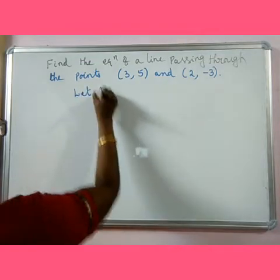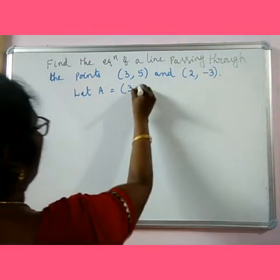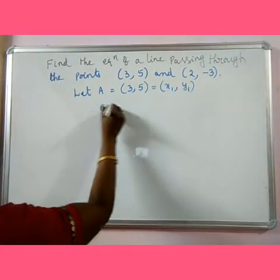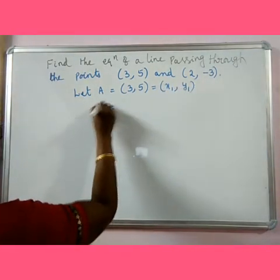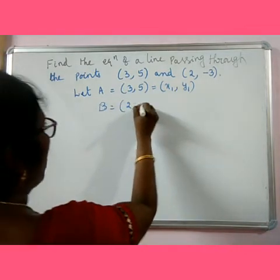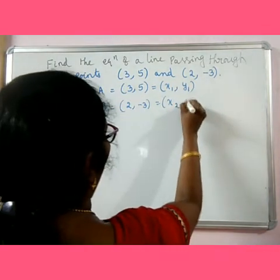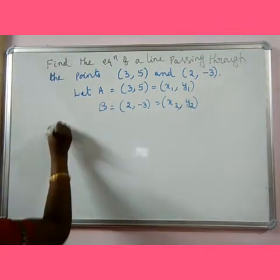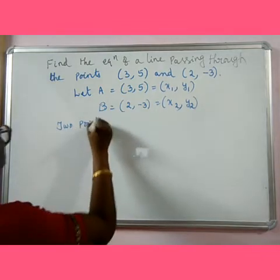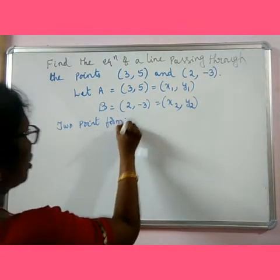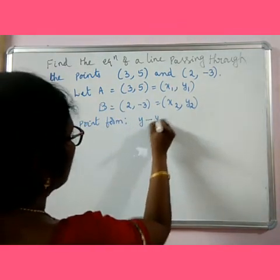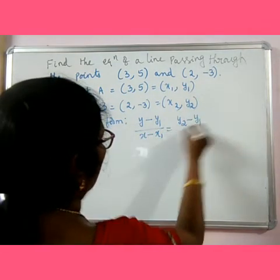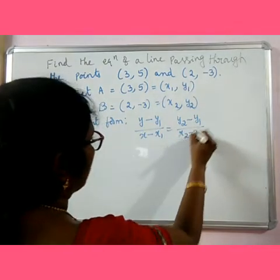Let A equal to (3, 5) — we state this as x1, y1. Let B equal to (2, minus 3) — we state this as x2, y2. In order to find the equation, the two-point form is y minus y1 by x minus x1 is equal to y2 minus y1 by x2 minus x1.